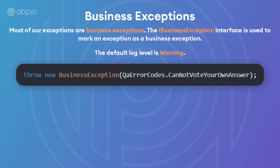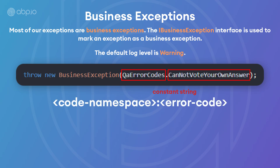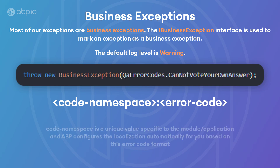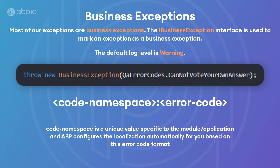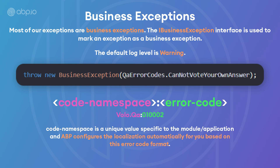The default log level is warning. Here is an example of a typical business exception. In QAErrorCodes, CannotVoteYourOwnAnswer is just a constant string. This error code format is recommended and applied by the ABP framework automatically — the code namespace, a colon, and then the error code — because the code namespace is a unique value specific to the module or application, and ABP configures it automatically for you. For example, volo.qa is the code namespace, and ABP configures this code namespace.